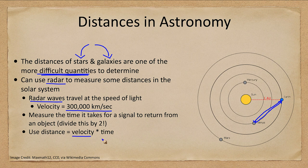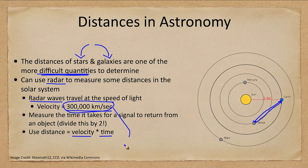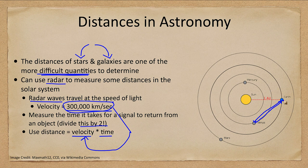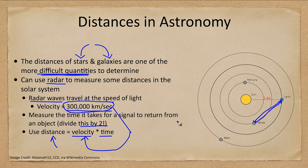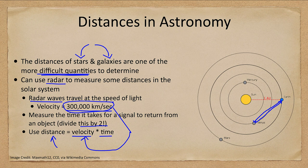Distance is velocity multiplied by the time. We know what the velocity is because it's 300,000 kilometers per second. We measure the time. We've got to divide it by two because it took time to get there and to get back, and that would give us the distance. However, this only works within the inner portion of our solar system. You need to have a strong enough signal for it to be detected and you also need a solid surface off which to bounce something. So it would not work for something like the Sun either.